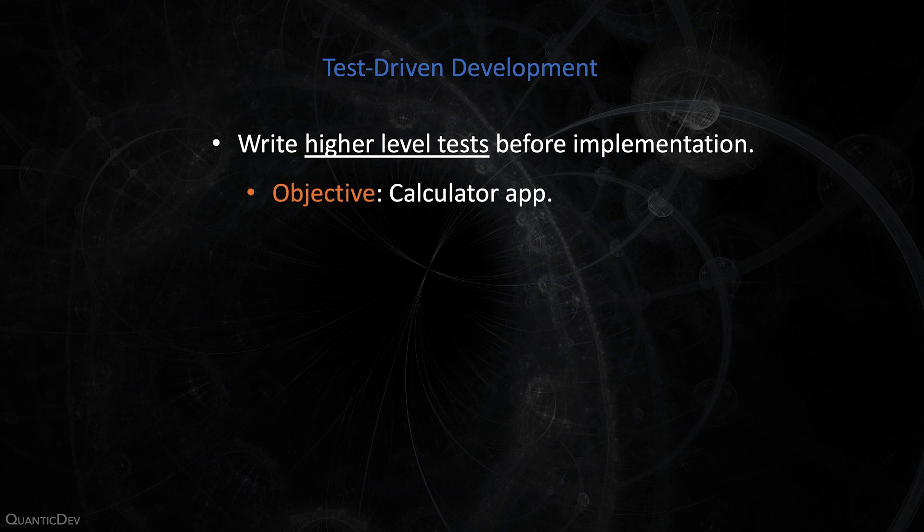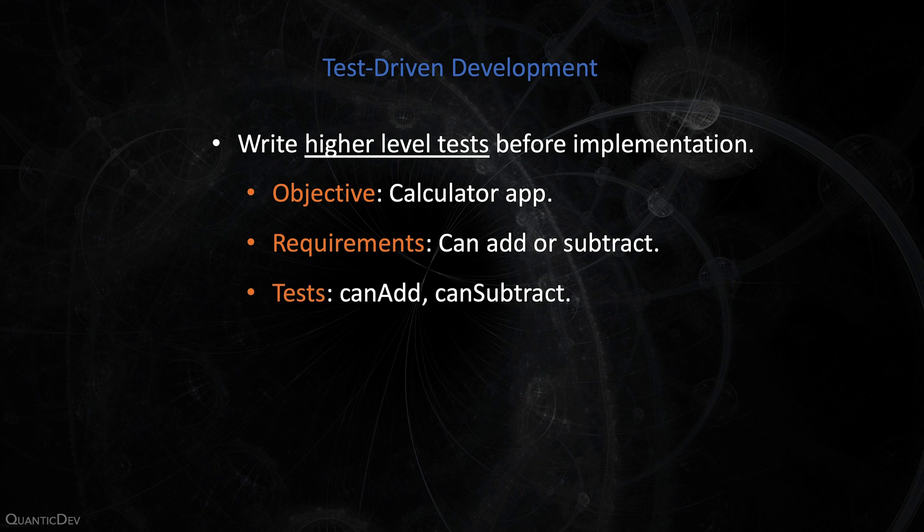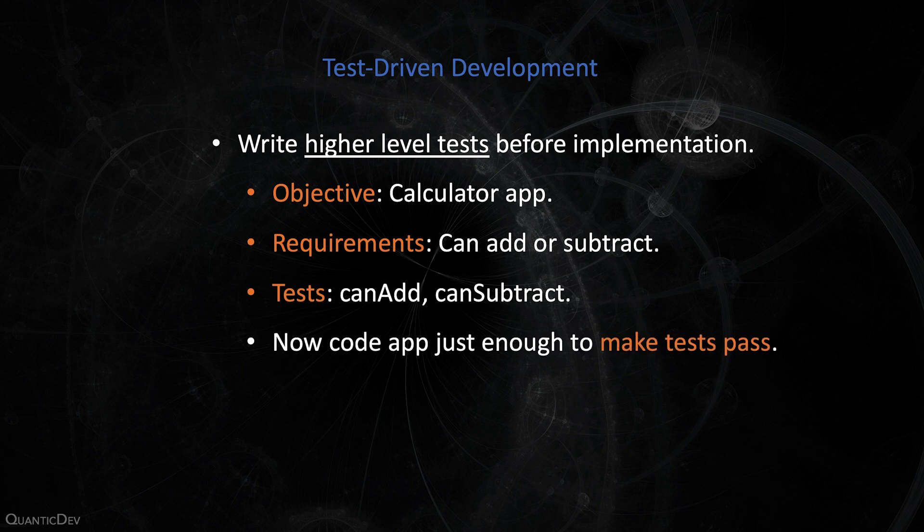Before coding any part of your app, you create the following tests: can add and can subtract. Now code your app just enough to make those tests pass. After you create high-level tests and code your app accordingly, you can create more refined tests for lower levels of your app as you code along. You can add tests for exceptional conditions, handling unexpected input, etc.